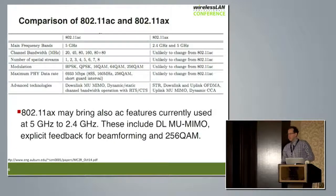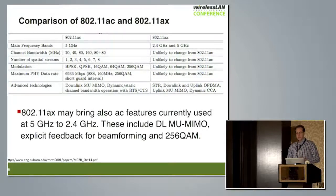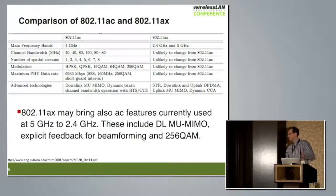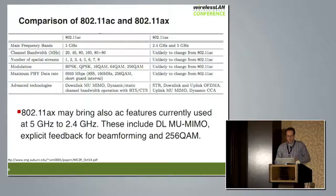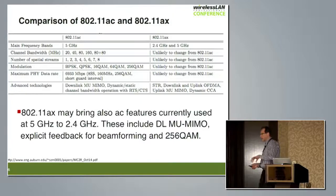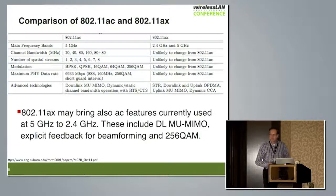Comparing AC and AX: many things will remain the same — data rates, channel bandwidth, and modulations will most likely remain unchanged. There will be a couple of additional technologies applied on top, and it's also likely that some AC features currently used at 5 GHz will be brought to the 2.4 GHz band.